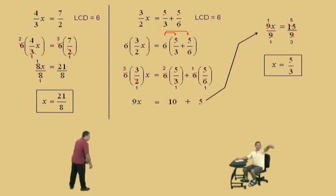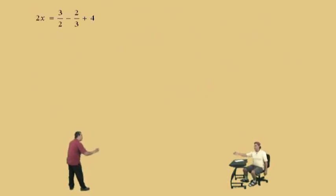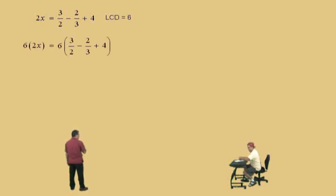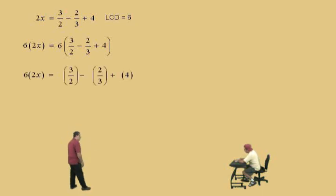Now that we're warmed up, let's do a tough one. Don't get scared. Just relax. We have two fractions on the right-hand side. What is our LCD? 6. What do we have to do? Multiply both sides by 6. The left-hand side is just 6 times 2x. What property do we have to do on the right-hand side? The distributive property.